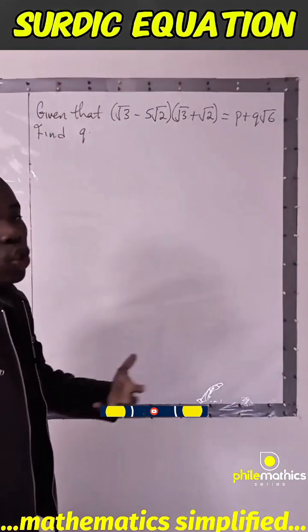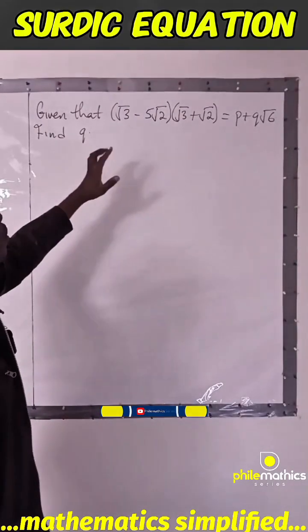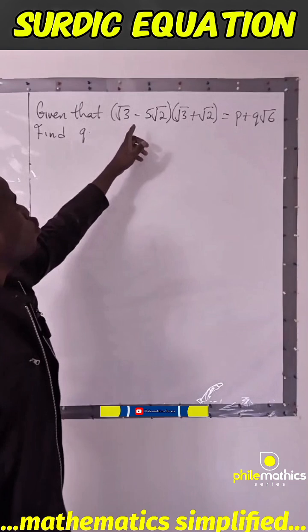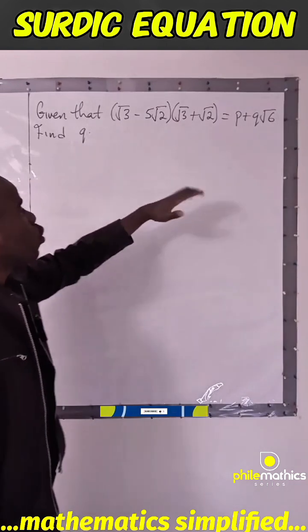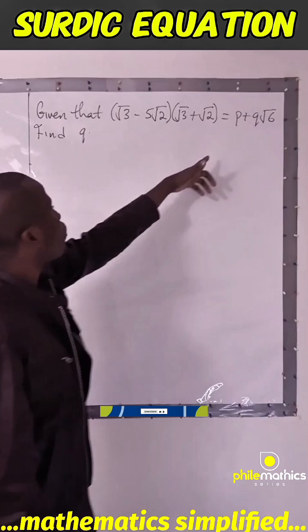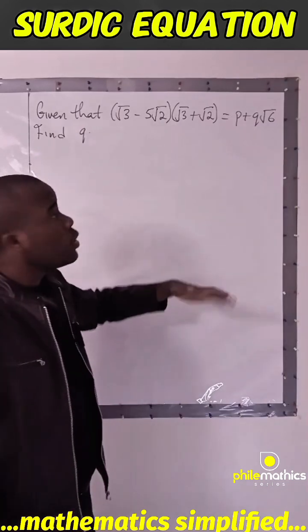This is a problem on surds. We are told that given (√3 - 5√2) multiplying with (3 + √2) equals p + q√6, find q. So what you want to do is to open this bracket.